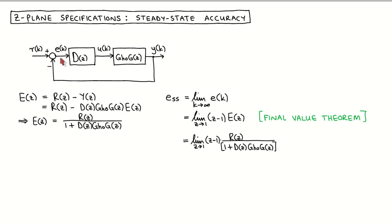To find an expression for the steady-state value of the error signal, we first find an expression for the Z transform of the error signal. The Z transform of the error signal is the Z transform of the reference input minus the Z transform of the output, which we read off from the block diagram. We can also see from the block diagram that Y is given by the loop transfer function times E. After some easy manipulation, we get that the Z transform of the error signal is the Z transform of the reference input divided by 1 plus the loop transfer function.